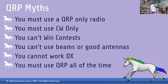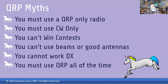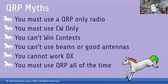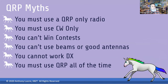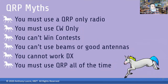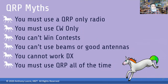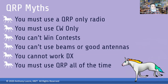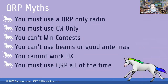There are a number of QRP myths. The first: you must use a QRP-only radio. Second: you must use CW only. Third: you can't possibly win contests. Fourth: you can't use beams or good antennas. Fifth: you cannot work DX. And finally: you must use QRP all the time. These are all myths — I'm going to disprove those in the next few slides.